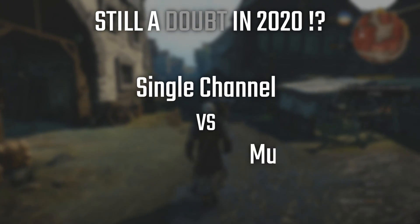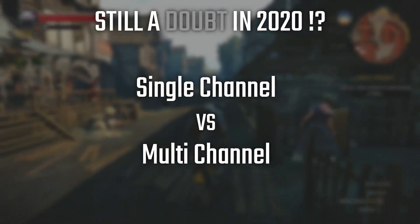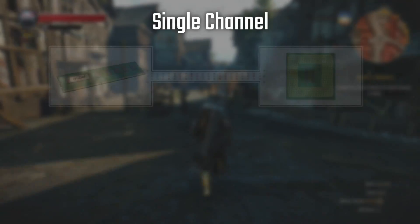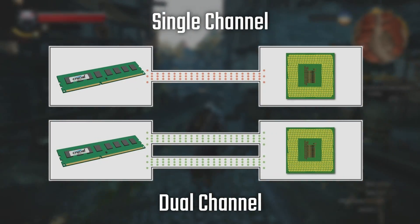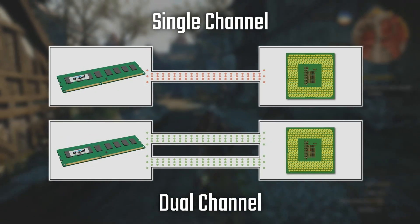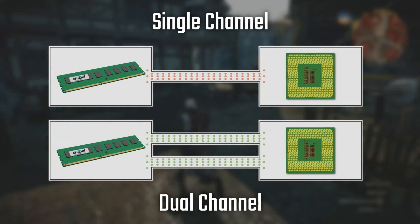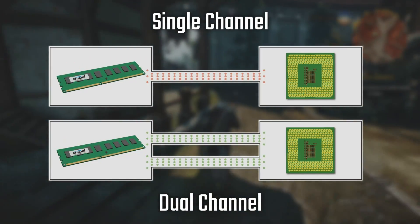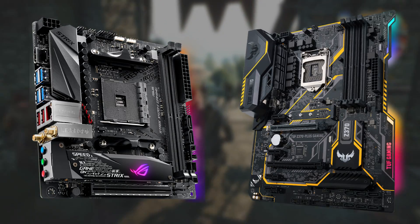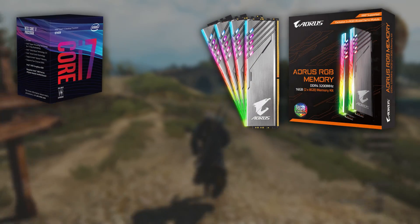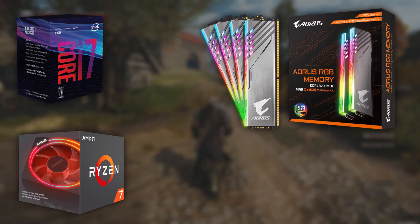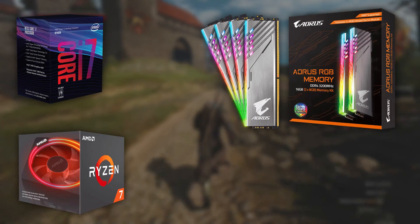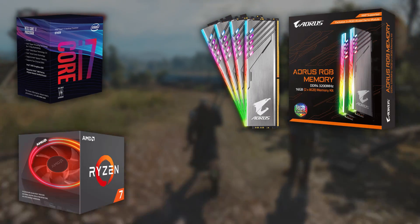Still in the RAM section, I want to clarify single-channel versus multi-channel. Single-channel means RAM is using one channel to connect with the CPU, while dual-channel uses two channels, having double the bandwidth. The same applies to quad-channel, which uses four channels with four times the bandwidth, and octa-channel, which uses eight channels with eight times the bandwidth. You need a supported motherboard and CPU to run them — having four RAM sticks on an i7-9700K or Ryzen 7 3700X won't make it quad-channel; you'll still be using dual-channel with two sticks per channel.